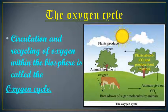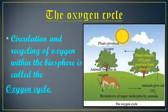In the oxygen cycle picture, you can observe biotic and abiotic components. Biotic means plants, animals, and microorganisms — that means all types of producers, consumers, and saprotrophs. Abiotic components include soil, air, water, and so on. Oxygen is continuously produced as well as used up in the atmosphere.